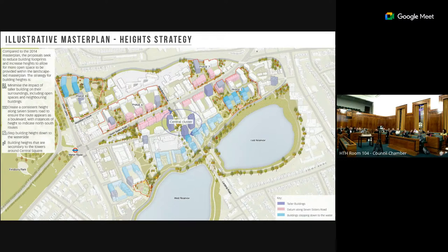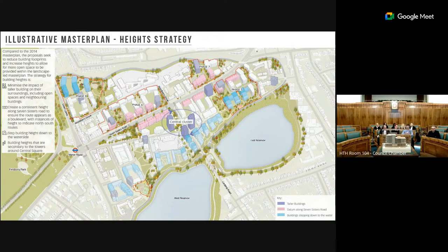A councillor notes that the masterplan is presumably determining the massing for phase eight now, which sounds like making a decision at this stage rather than truly being able to review it later. The applicant responds: they are currently in the process of doing that exercise on phase eight. Previously they looked at the other phases which are quite similar, but phase eight is very much its own thing because there is more space around those buildings. They still envisage a similar set of problems but won't preempt it — they'll complete the study and share it with officers.